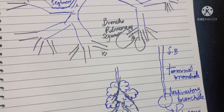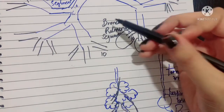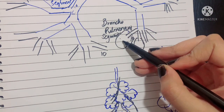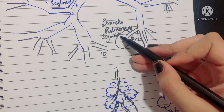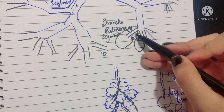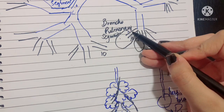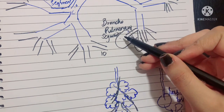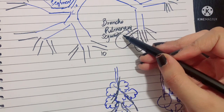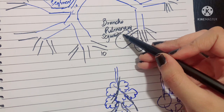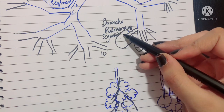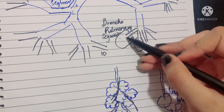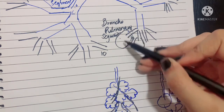Between each pulmonary unit lie the segmental venules. These venules are oxygenated by the alveoli and carry blood back to the heart. Each bronchopulmonary segment also contains its own segmental artery, segmental bronchi, autonomic nerves, and lymphatics.